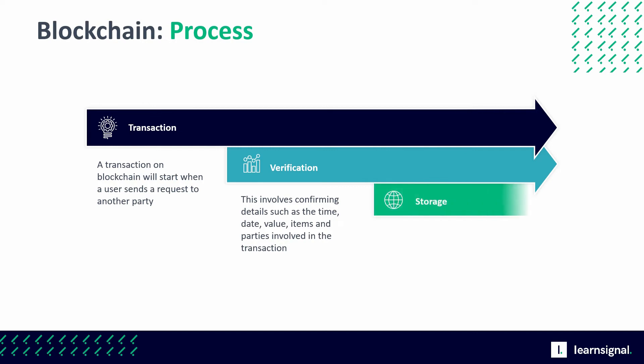The verified transaction is then stored, along with many other transactions, in a data block. When all transactions in that particular block have been verified, a hash will be assigned to the block. A hash is a unique code that is used to identify the block. When the block has been hashed, it will then be added to the end of the blockchain.